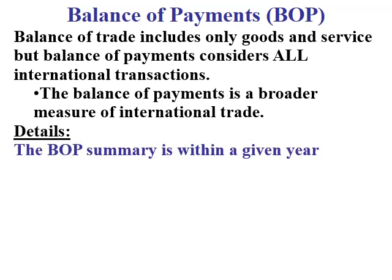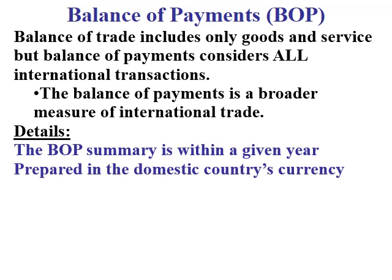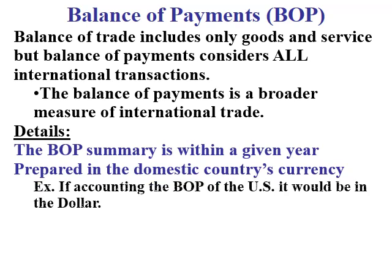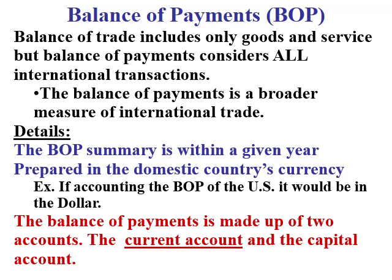Like many economic measures, we look at balance of payments within a given year. One difference from GDP and other statistics is that balance of payments is always measured in a given country's currency — the United States in dollars, Germany in euros, Japan in yen. There are two components to balance of payments: the current account and the capital account. One important thing to keep in mind is that the current account will balance with the capital account.